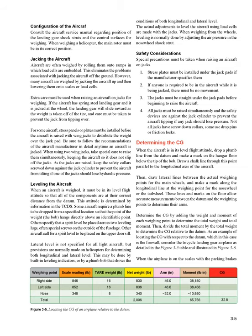Leveling the Aircraft: When an aircraft is weighed, it must be in its level flight attitude so that all components are at their correct distance from the datum. This attitude is determined by information in the TCDS. Some aircraft require a plumb line to be dropped from a specified location so that the bob hangs directly above an identifiable point. Others specify that a spirit level be placed across two leveling lugs, often special screws on the outside of the fuselage. Other aircraft call for a spirit level to be placed on the upper door sill. Lateral level is not specified for all light aircraft, but provisions are normally made on helicopters for determining both longitudinal and lateral level, either by built-in leveling indicators or by a plumb bob.